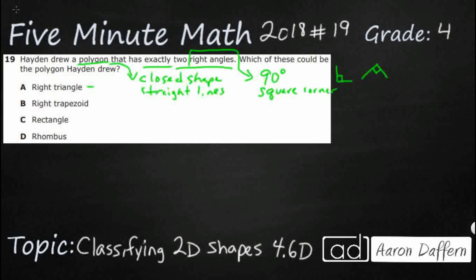So we need two of those in a shape. Let's start with option A, our right triangle. A right triangle has one right angle, but by definition it can't have more than one. A right triangle has one right angle and then two acute angles. Triangles only have three angles, and if you try to put two right angles into a triangle, it's just not a triangle anymore — it's going to at least have to be a quadrilateral. So unfortunately it's not going to be that.